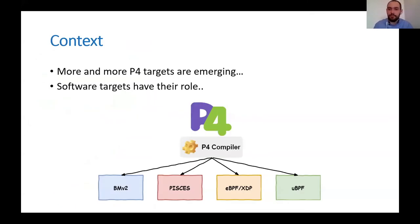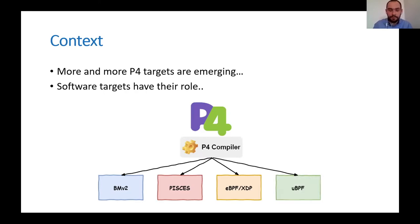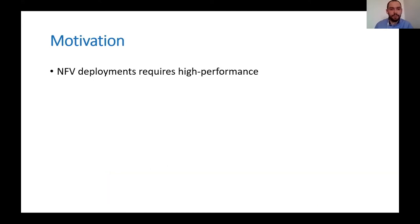Let me introduce some context. With the constant development of the P4 language, more and more programming targets are emerging. Even though P4 was designed more for hardware, we have a number of software targets in the ecosystem. We have BMv2 software switch, which is a reference implementation for P4. There is also Pisces, which allows generating OpenVSwitch code from a P4 program. The P4 compiler already supports the next generation Linux data path such as eBPF or XDP. This talk is about a new backend for P4 — UserSpace uBPF — which provides a safe execution environment for userspace applications. You may ask why we need another backend for P4.